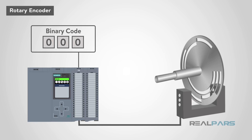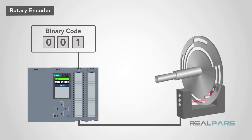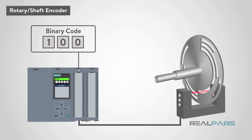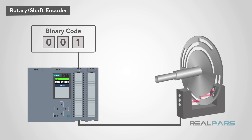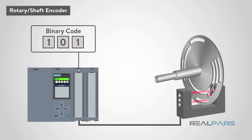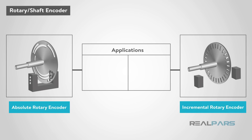A rotary encoder collects data and provides feedback based on the rotation of an object, or in other words, a rotating device. Rotary encoders are sometimes called shaft encoders. This encoder type can convert an object's angular position or motion based on the rotation of the shaft, depending on the measurement type used. Absolute rotary encoders can measure angular positions, while incremental can measure things such as distance, speed, and position. Rotary encoders are employed in a wide variety of application areas such as computer input devices like mice and trackballs, as well as robotics. Rotary or shaft encoders may be absolute or incremental.